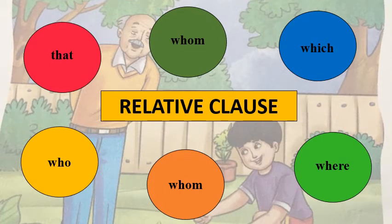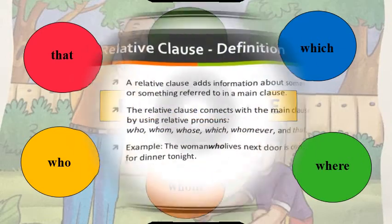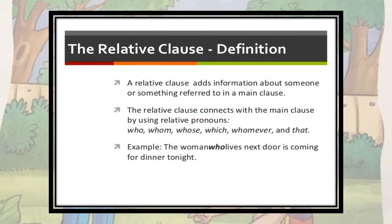Now we are going to learn what a relative clause is. A relative clause adds information about something or someone referred to in a main clause. There will definitely be a main clause in the sentence. A relative clause adds up more information about the main clause. It is not necessary — even if the relative clause is not there, we get the meaning of the sentence — but it gives us further information about the main clause.